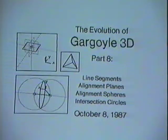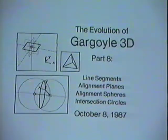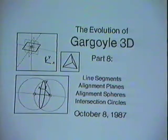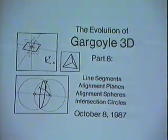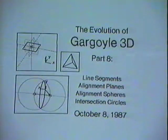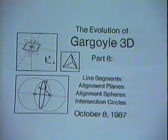This is the evolution of Gargoyle 3D Part 8. Snap-dragging in three dimensions has really come together since the last segment. I've implemented a line segment class so that we no longer have to work entirely in the blocks world. Also, in addition to the alignment lines that were there before, I've implemented alignment planes, alignment spheres, and their intersection circles, all of which are gravity active and can be used for precise point placement.